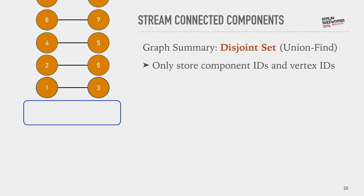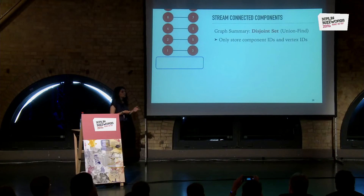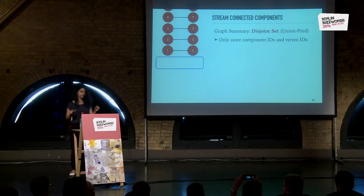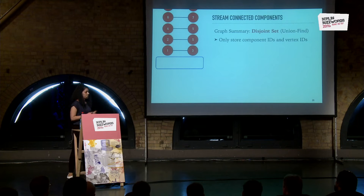Now, what if I told you that we can do this without iterations and without ever storing the graph in memory? We don't need to know who's a neighbor of whom. We only need to keep the right graph summary — in this case, a disjoint set, or union-find. We only need to store the component IDs and what vertices belong to each component. We don't need to store the whole graph, the edges, and everything else.